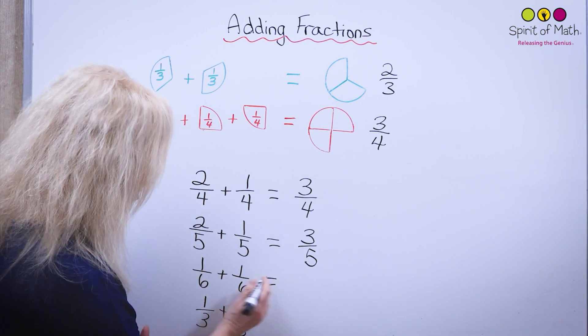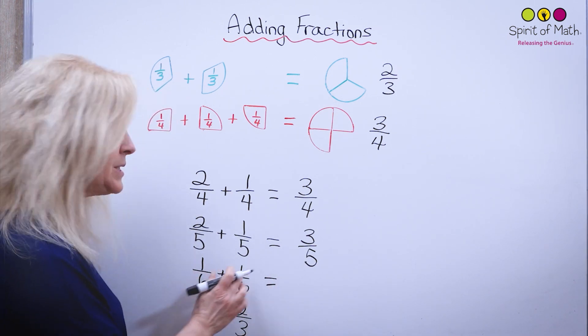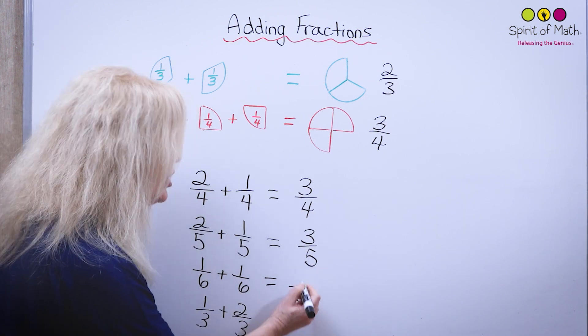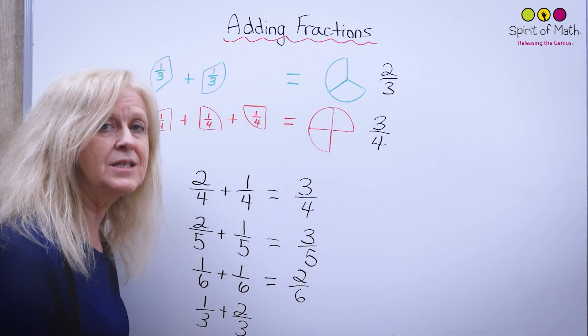So let's do this next one. You have one sixth plus another one sixth. How many sixths all together? You have two sixths all together.